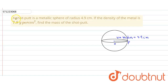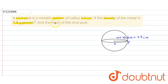In the given question, a shot put is given in the form of a metallic sphere of radius 4.9 cm. We are given that the density of the metal is 7.8 gram per centimeter cube. Now we have to find the mass of this shot put. As you can see in the given figure, the radius is given as 4.9 cm.